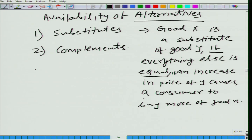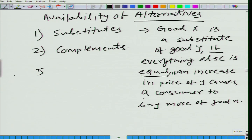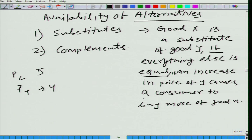Let us take the example of tea and coffee. At present, price of coffee is 5 rupees and price of tea is 4 rupees — by the way, this is what you pay on a train. Let us say someone is currently buying coffee at 5 rupees. If the price of coffee increases from 5 to 6, 7, 8, 9 — there will be a point when he shifts from coffee to tea, unless he hates tea completely.